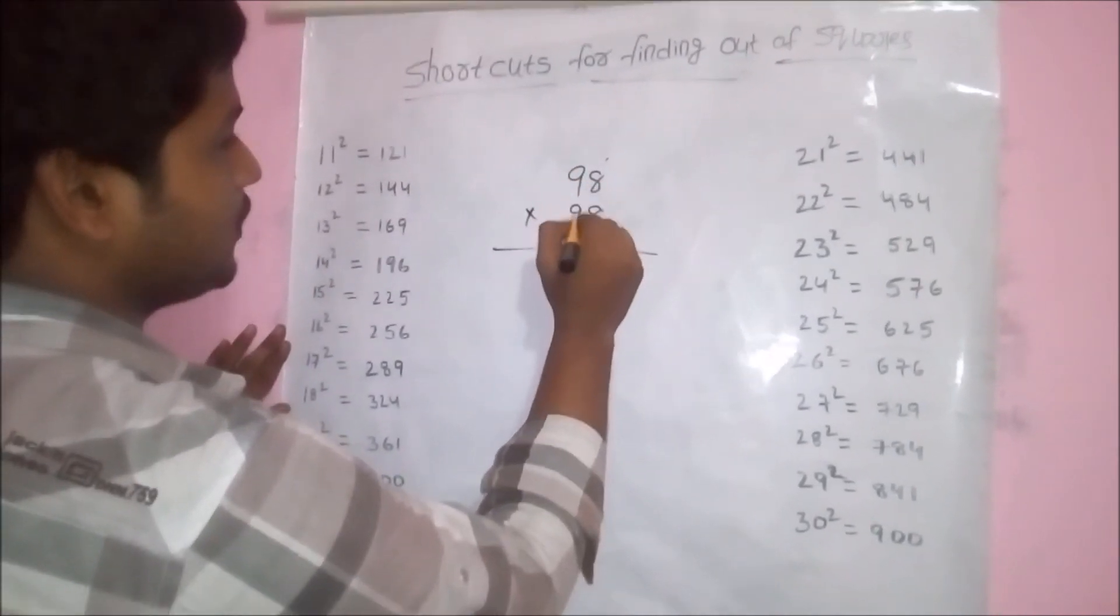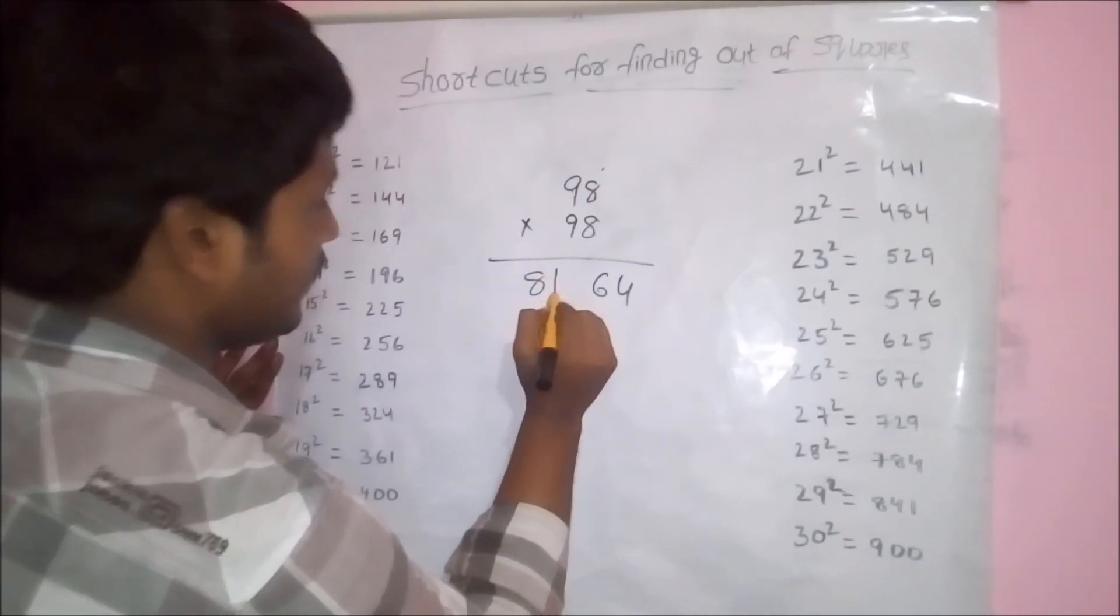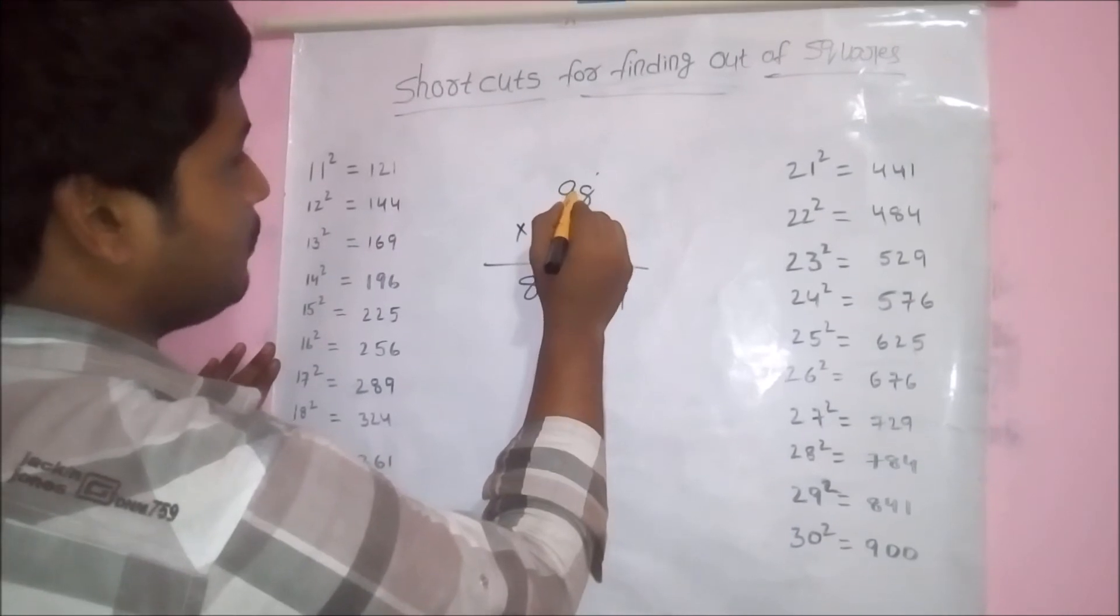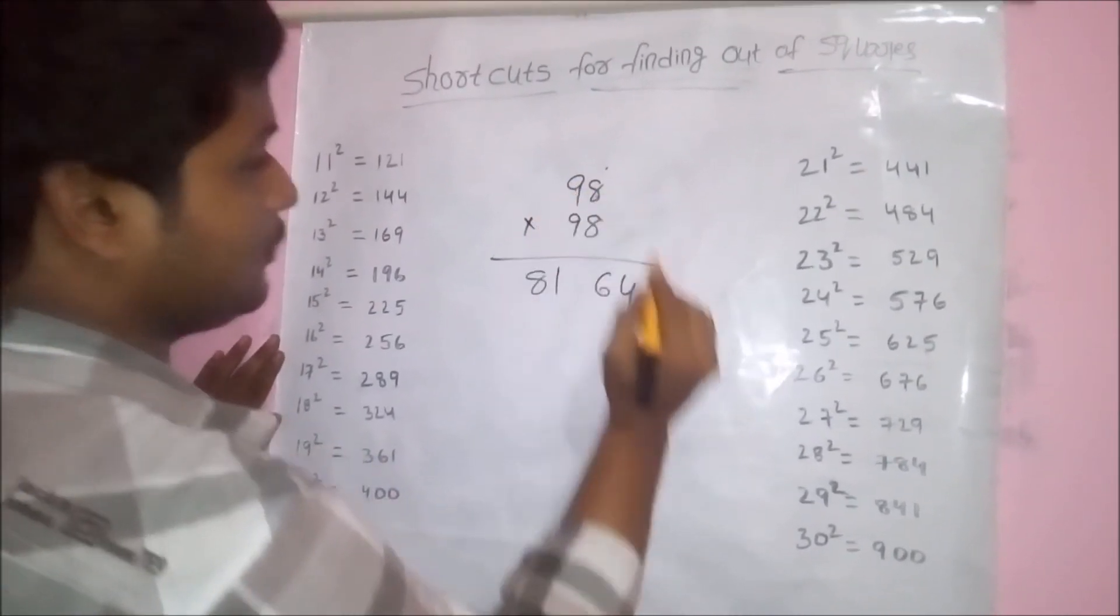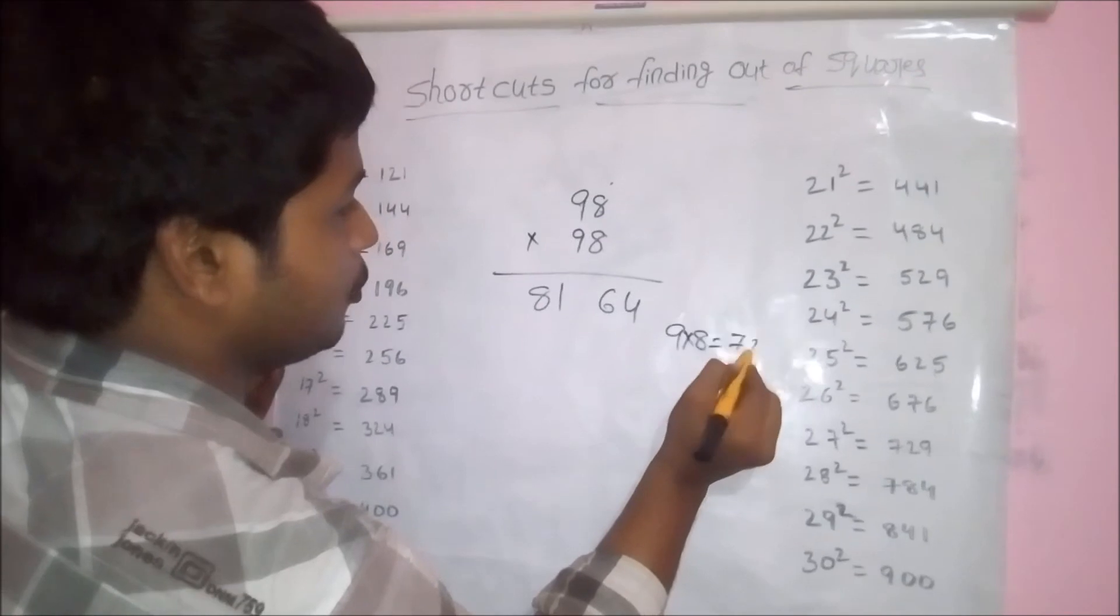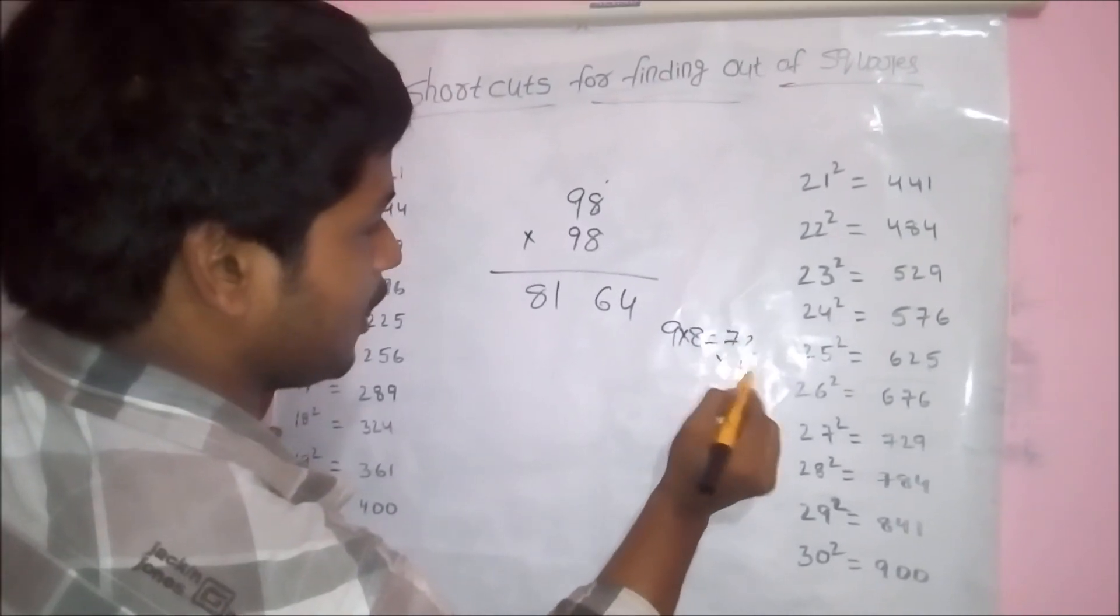And tens digit, we have to square them. 9 square, 81. And multiply the unit digit and tens digit. That means 9 into 8 becomes 72. And double it, double the value.